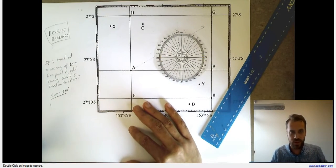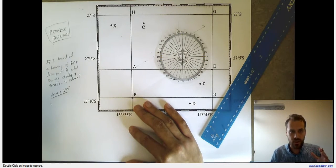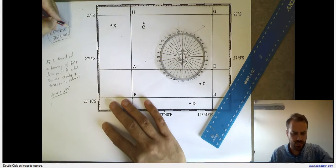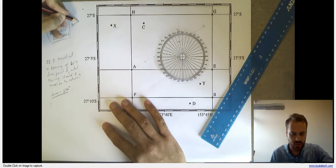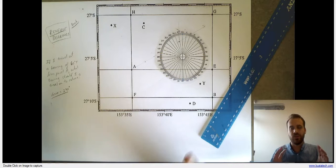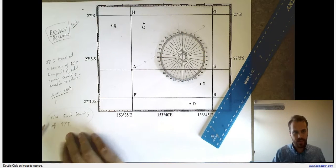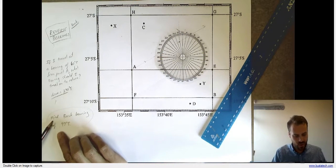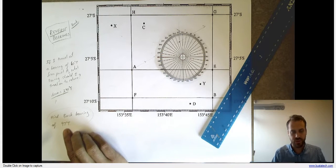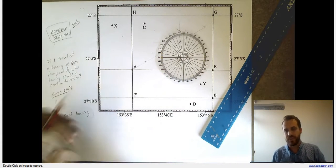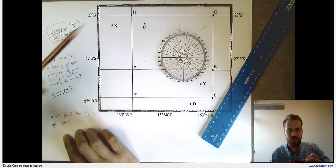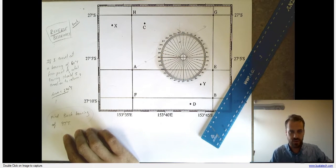I've got a faster way that I can show you. Let's do a pure reverse bearing — some of these are called back bearings as well, so don't get too confused. Reverse bearings and back bearings are the same thing. Let's take a look at a more mathematical way to do it. Here's our question: find the back bearing of 97 degrees true. This hasn't given us information about where we started or where we ended — it's just a pure question. Here's a direction, what's the reverse of that direction?